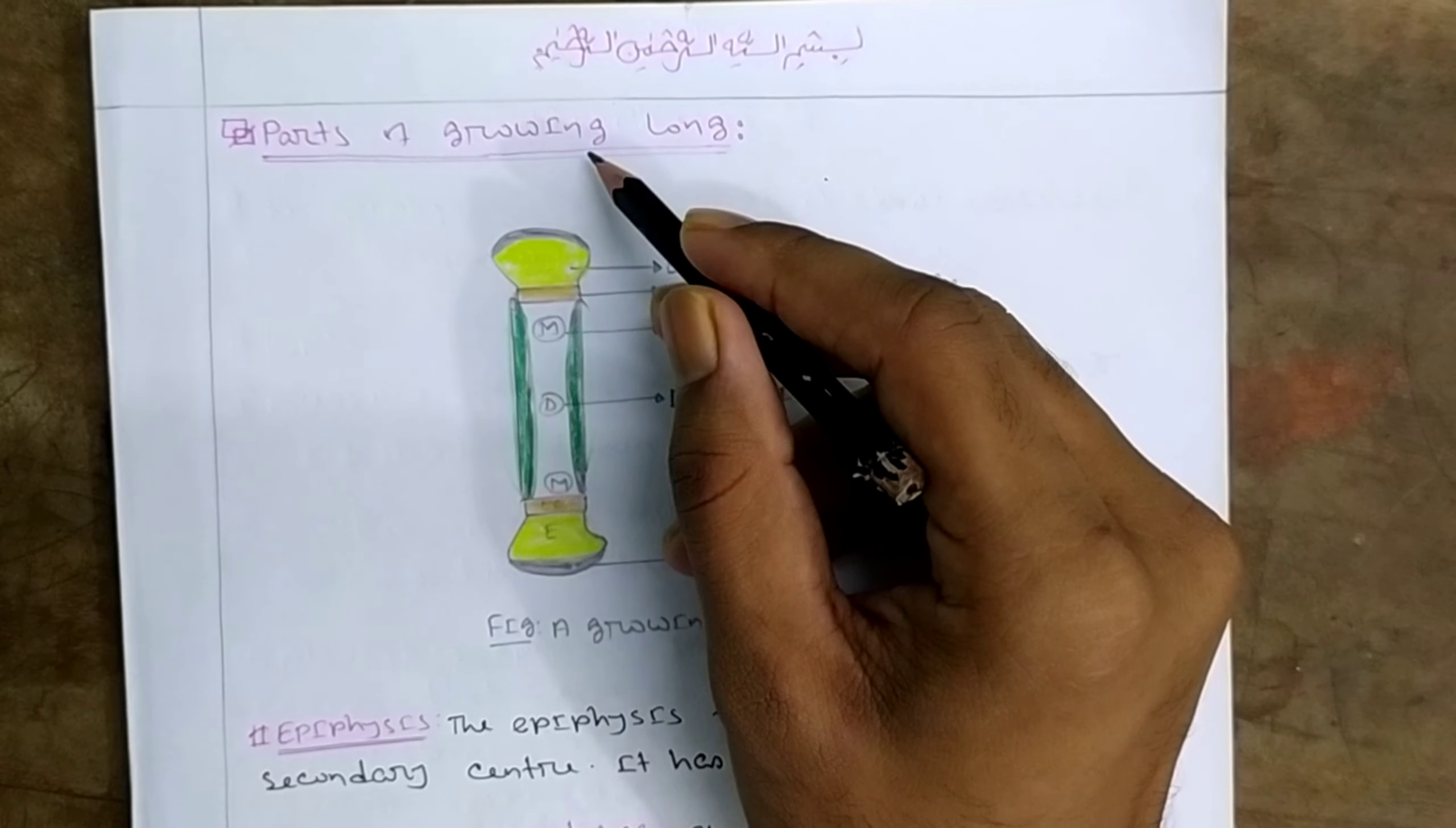The parts of a long bone are metaphysis, diaphysis, epiphysis, metaphysis, diaphysis, and epiphyseal cartilage. So epiphysis is the key part.